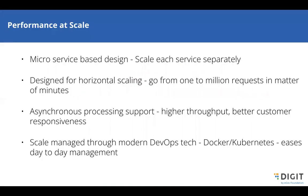For performance at scale, the microservice architecture allows each service to be scaled separately through horizontal scalability. Asynchronous processing is achieved using Kafka — reads are synchronous, writes are asynchronous. Docker is used for containerization and Kubernetes for container orchestration.